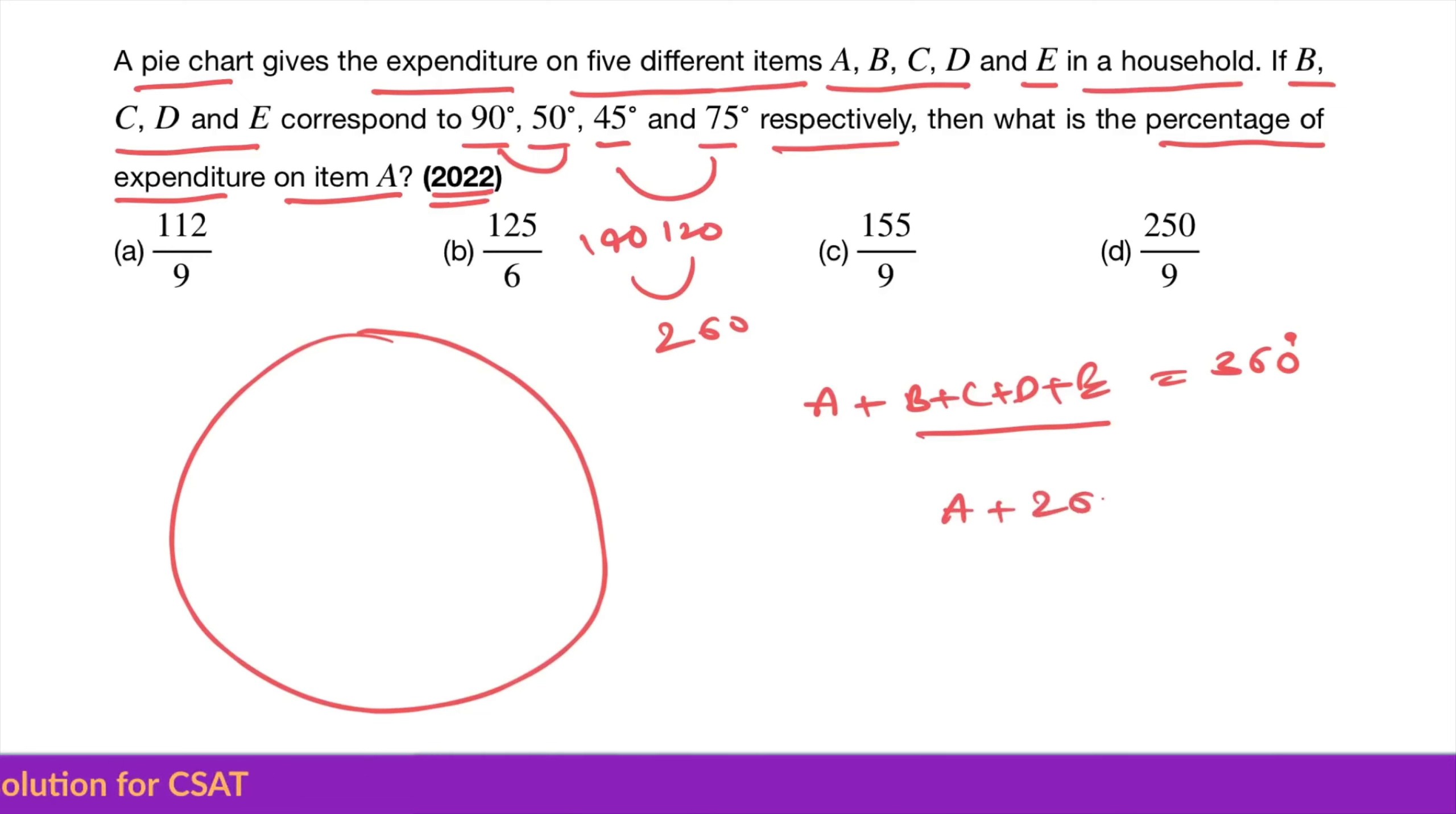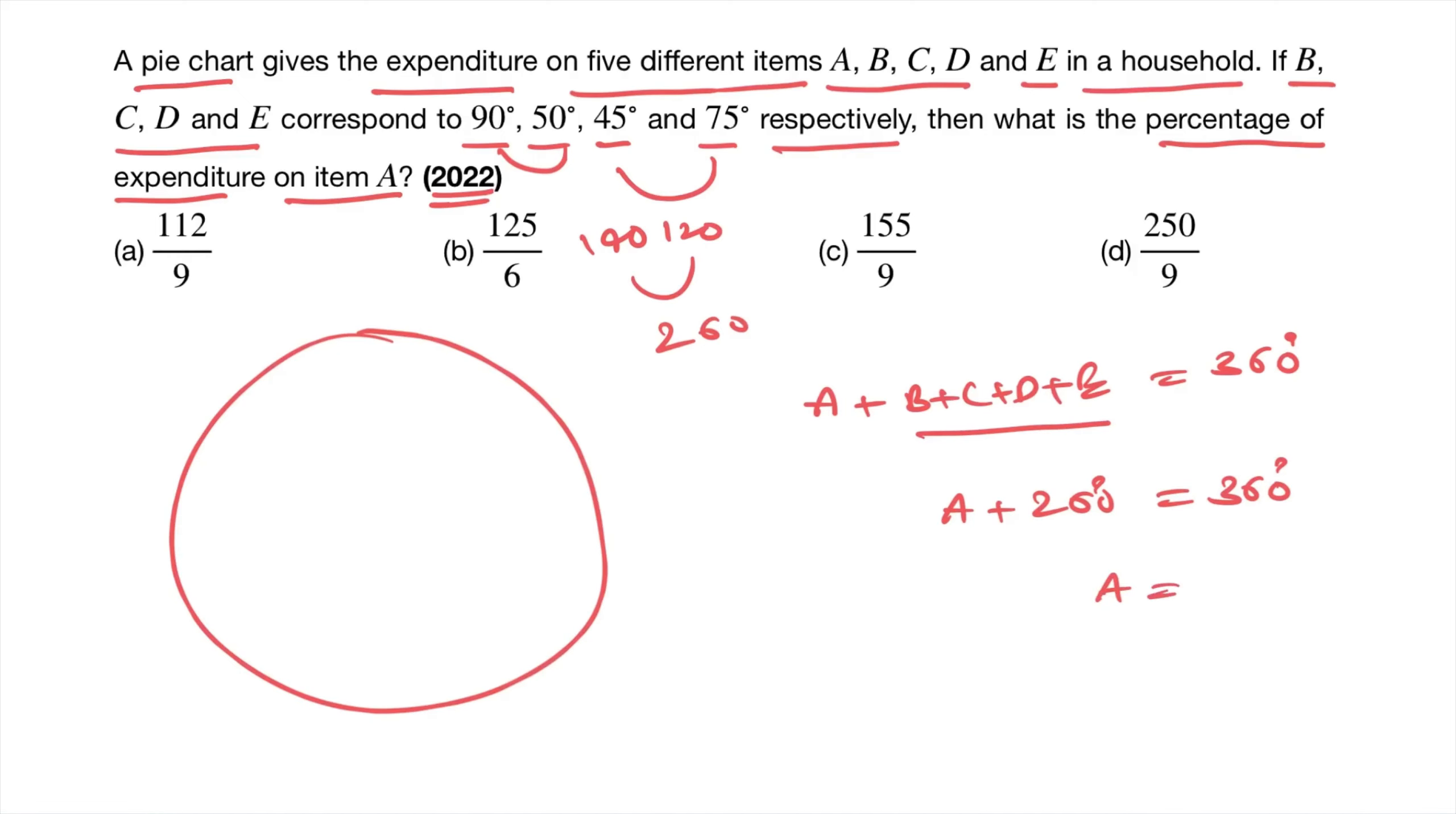So A plus 260 degrees is equal to 360 degrees. A is equal to 360 minus 260, which is 100 degrees. Now what is the percentage of expenditure on item A out of total? That is equal to 100 by total.